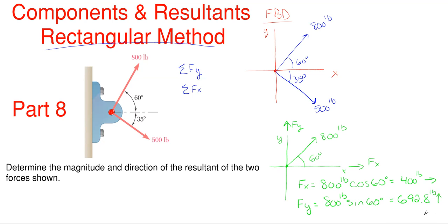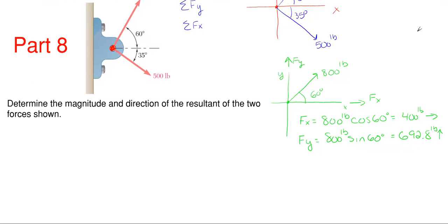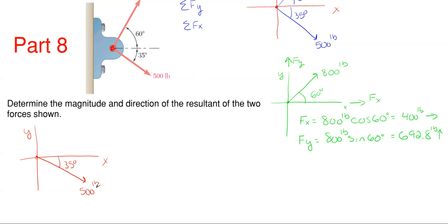Now we're going to repeat that process for the 500. The 500 is going down and to the right and it is off the x-axis by 35 degrees. Since the 500 is going down and to the right, the components have to match that: the y will have to be going down and the x will have to be going to the right. Let's figure out our x and y components for the 500.